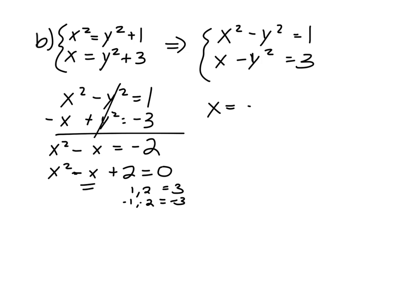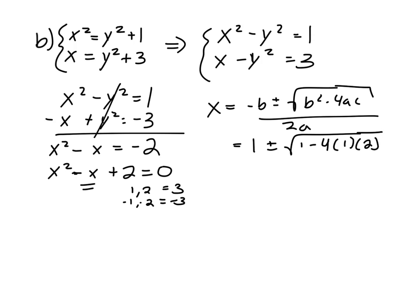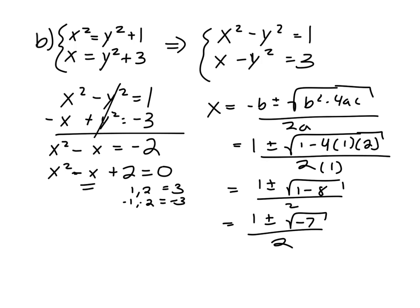So, I'll have x equals negative b plus or minus the square root of b squared minus 4ac divided by 2a. So, b here is negative 1, so that's 1 plus or minus the square root of 1 minus 4 times a, which is also 1, and then c, which is 2. And then this is 2 times a, which is 1. So, 1 plus or minus the square root of 1 minus 8 over 2. And so, we get 1 plus or minus the square root of negative 7 over 2. The square root of a negative number is not a real number. So, there is no solution to this system. Or you could say your solution is the null set.